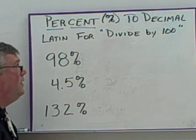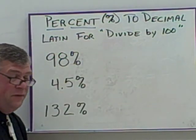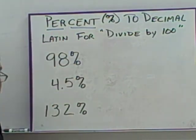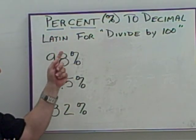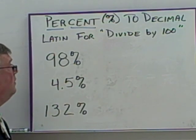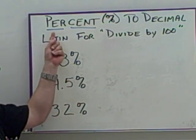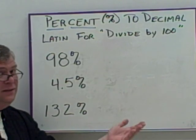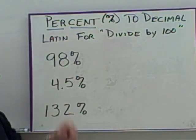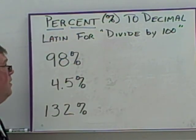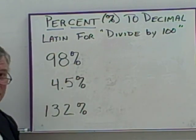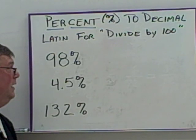Now let's look at converting percents to decimals. The word percent is actually two Latin words for 'divide by 100': per means divide by, cent means 100 — think of century, 100 years. That's exactly what you do to convert a percent to a decimal: you divide it by 100.